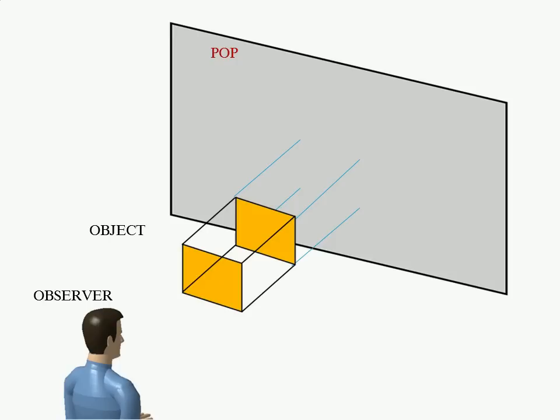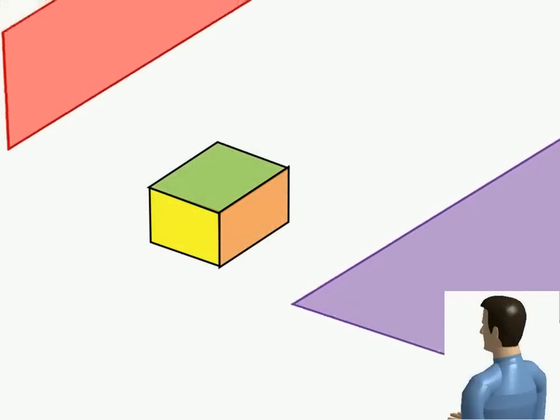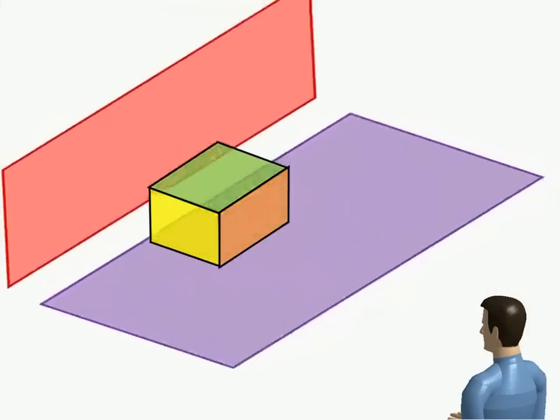The view of object is formed on POP when the points of intersection of projectors and POP are joined in proper sequence to form a view of object. Observer, object, and plane of projection are three basic elements of orthographic projection.